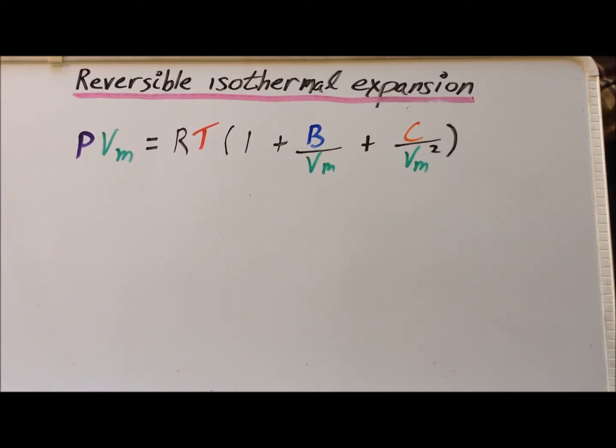First, we remind ourselves of at least one form of the Virial equation. P times V sub m, where P is the pressure and V sub m is the molar volume, is equal to RT times this particular expansion: one plus B over Vm plus C over Vm squared. We can extend this as far as we like, but in this case we're going to stop at the Virial constant C.